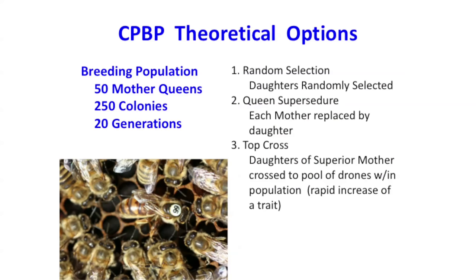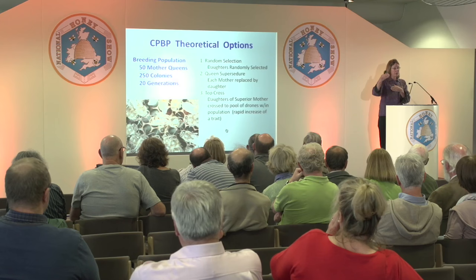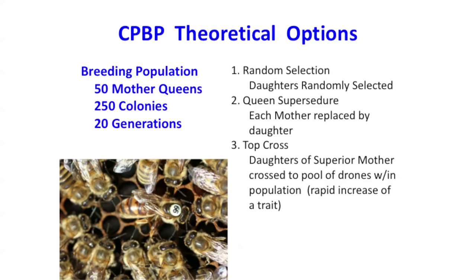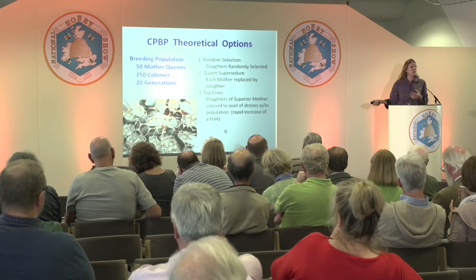In this theoretical model, what I described is pretty much random selection. If you start with a smaller number of colonies — say 20 — you'd probably want to take at least a daughter from each of those mothers just to maintain the integrity of that gene pool. You can also do a top cross: if you have a really superior queen showing more resistance to varroa, you can mate her to the pool of drones from the selected population. This can be a little risky — you could do it maybe one or two years, but eventually you're really going to narrow the gene pool.